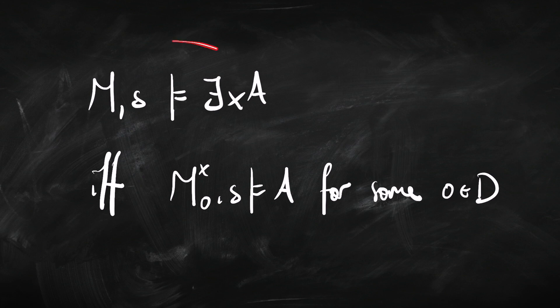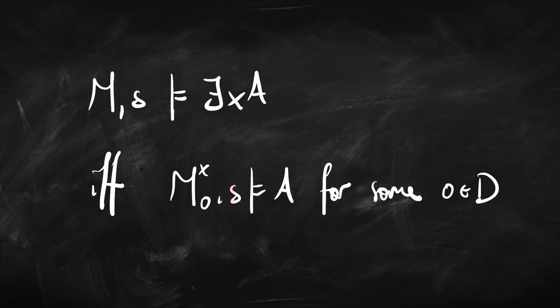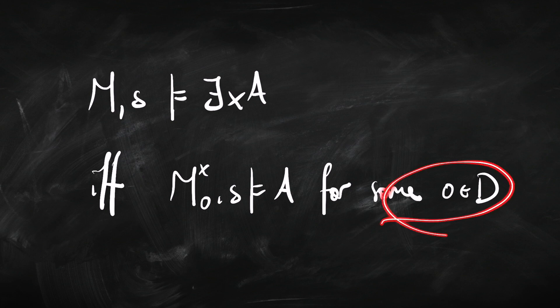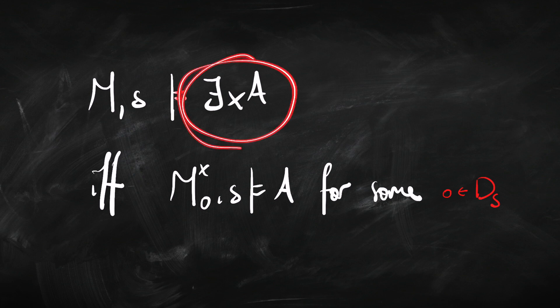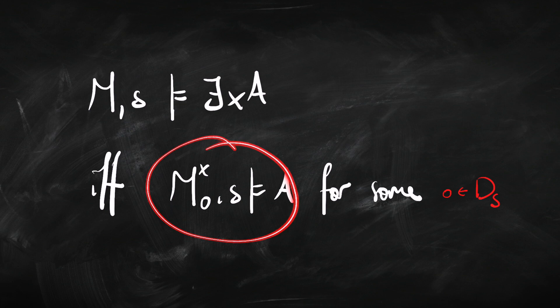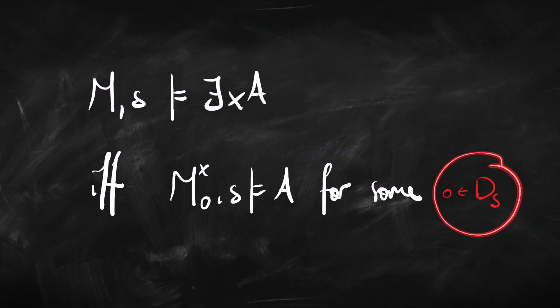In a constant domain model, here's how we gave the meaning for the existential quantifier. We said the existential quantifier is true in a model at a state just in case A is true at the same state in the variant model which makes X point at object O, for some object in the domain — where that domain is the overall whole domain for the model. So, when we move to a variable domain model, basically all we change is we require that object to be part of S's domain. Now we say there is an X such that A is true just in case, in the variant model which makes X point at O, that makes A true at state S, for some object that is in that world's domain. O has to be in S's domain.